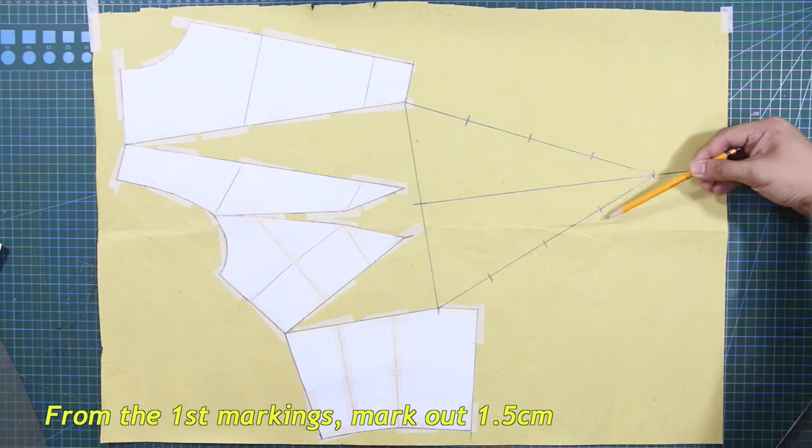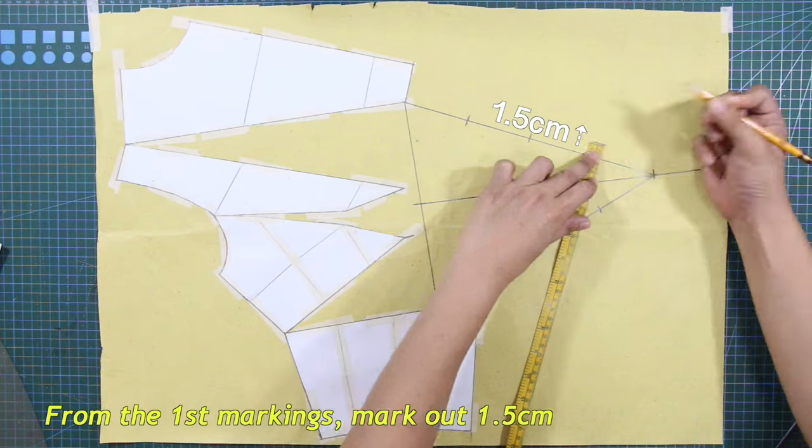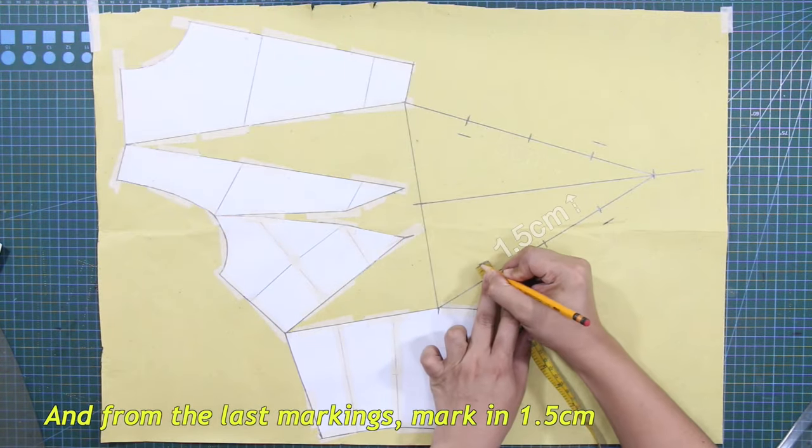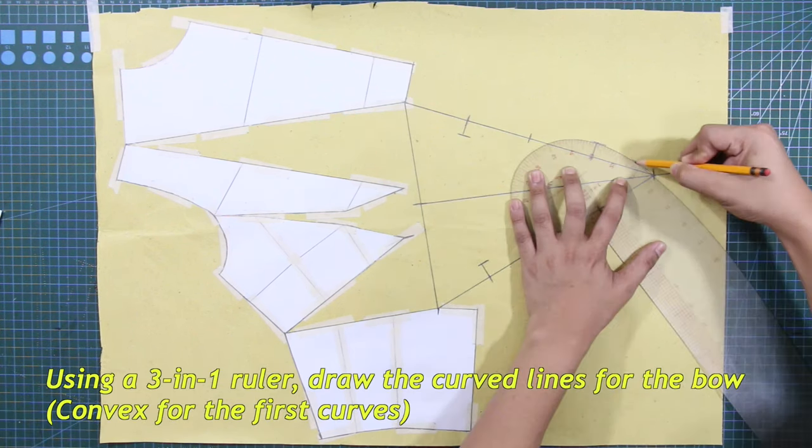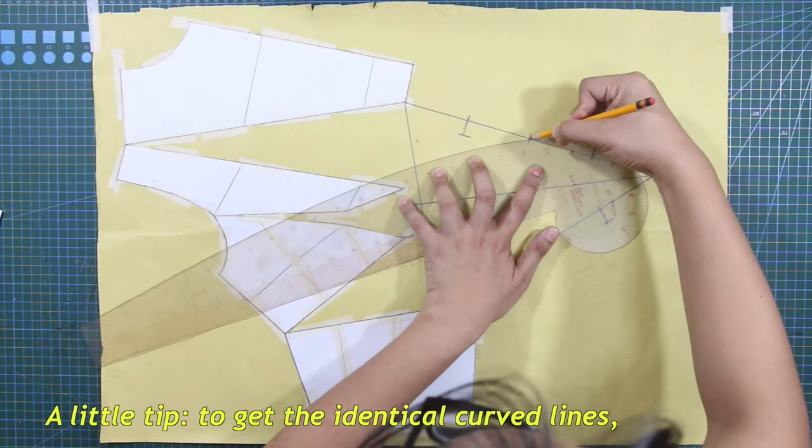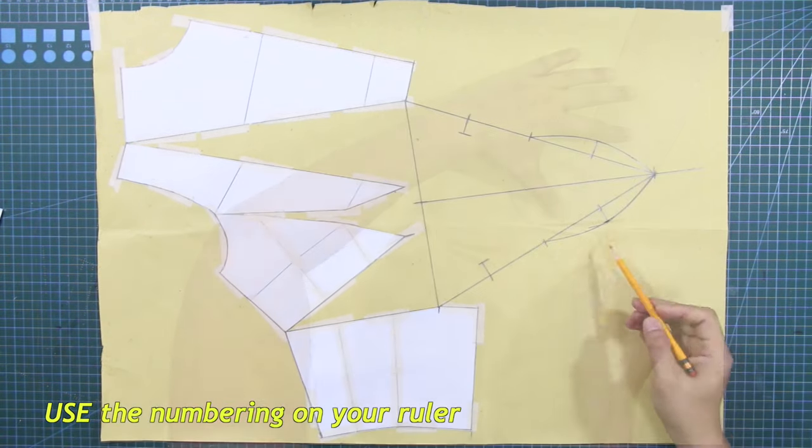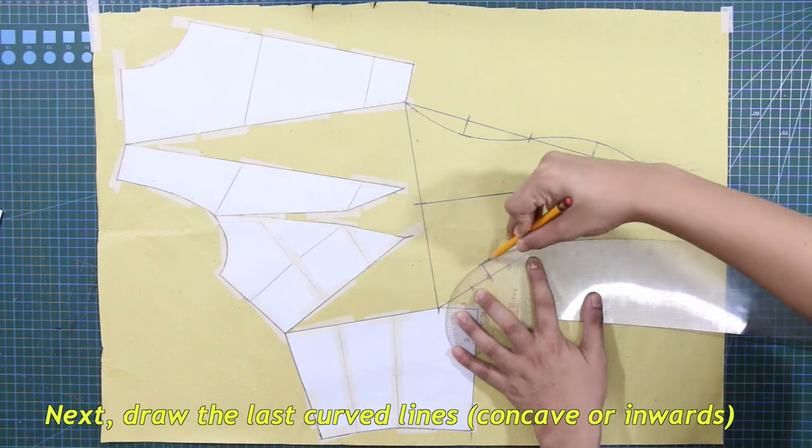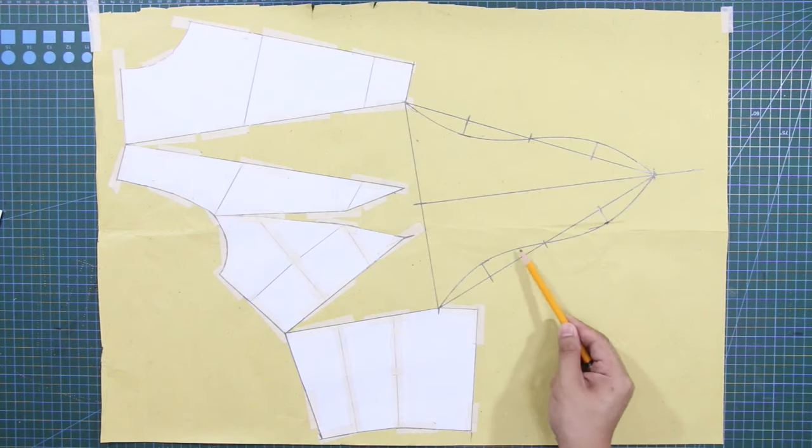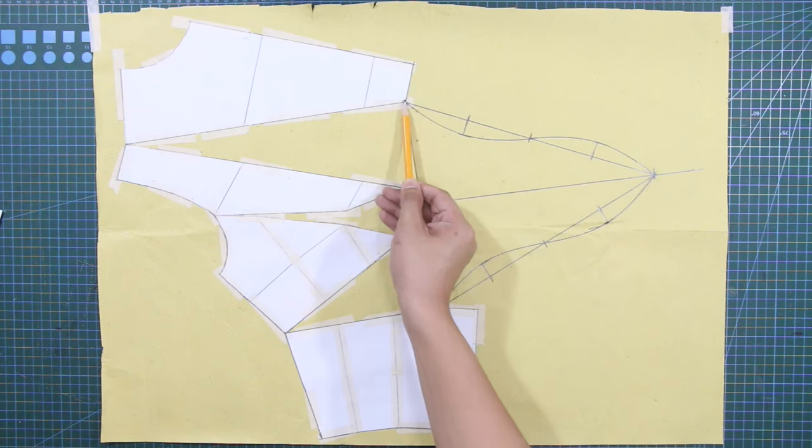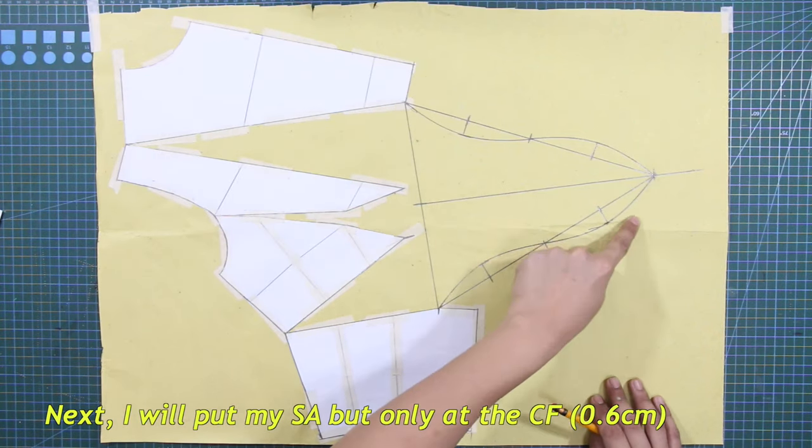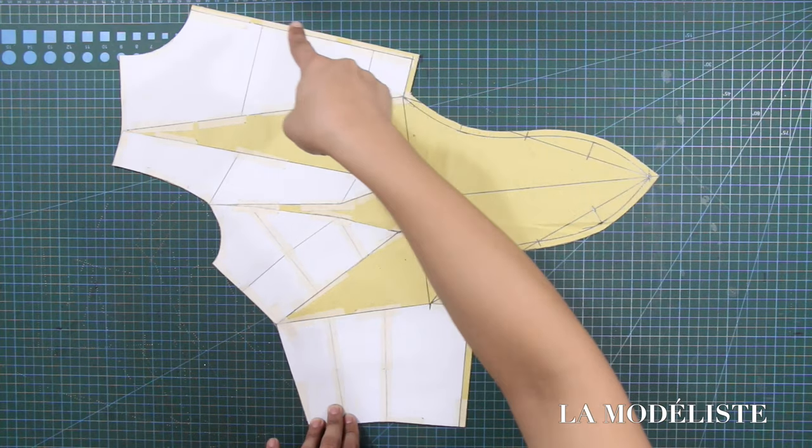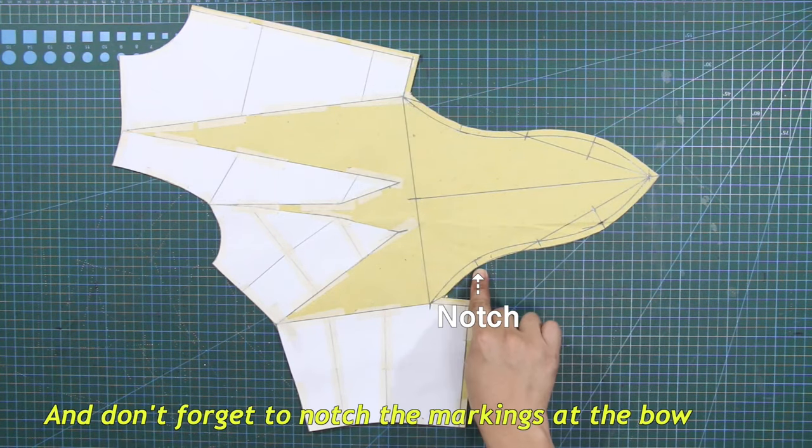Next, from the first markings, mark out 1.5 cm. And from the last markings, mark in 1.5 cm. Using a 3-in-1 ruler, draw the curve lines for the bow. Convex for the first curves. A little tip to get the identical curves, use the numbering on your ruler to achieve the exact same shape for each line. Next, draw the last curve lines. This time, the curve lines are going inward or concave. For the sake of this tutorial, I will put my sewing allowance, but only at the center front. And don't forget to notch the markings at the bow.